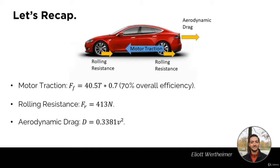We also have the rolling resistance, which is FR equals 413 N. As we saw in the previous lecture, because the weight of the car is constant and the rolling resistance coefficient is constant as well, this rolling resistance force remains the same throughout. Finally, we have the aerodynamic drag, expressed as D equals 0.3381 multiplied by the velocity squared of the car.